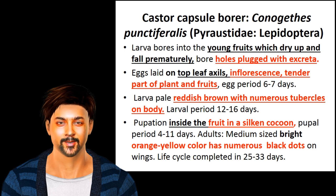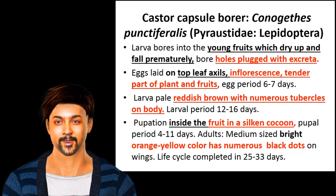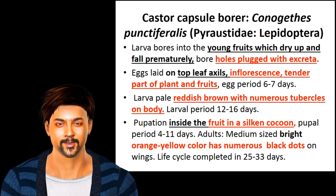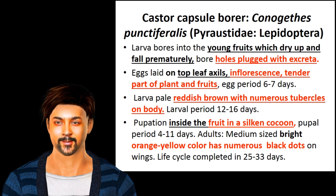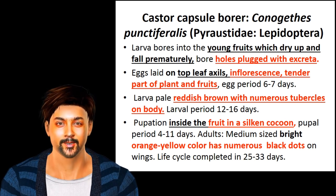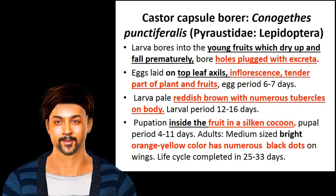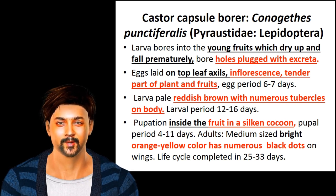The next borer is the capsule borer, whose major host is castor. It bores into fruits, which dry, open, and fall prematurely. Bore holes are plugged with excreta. Eggs are laid on top leaf axils, inflorences, and tender parts of plants and fruits. The egg period is about one week. Larvae are pale reddish-brown with numerous tubercles on the body. Larval period is about 12 to 16 days. Pupation occurs inside the fruit in a silken cocoon, with a pupal period of 4 to 11 days.